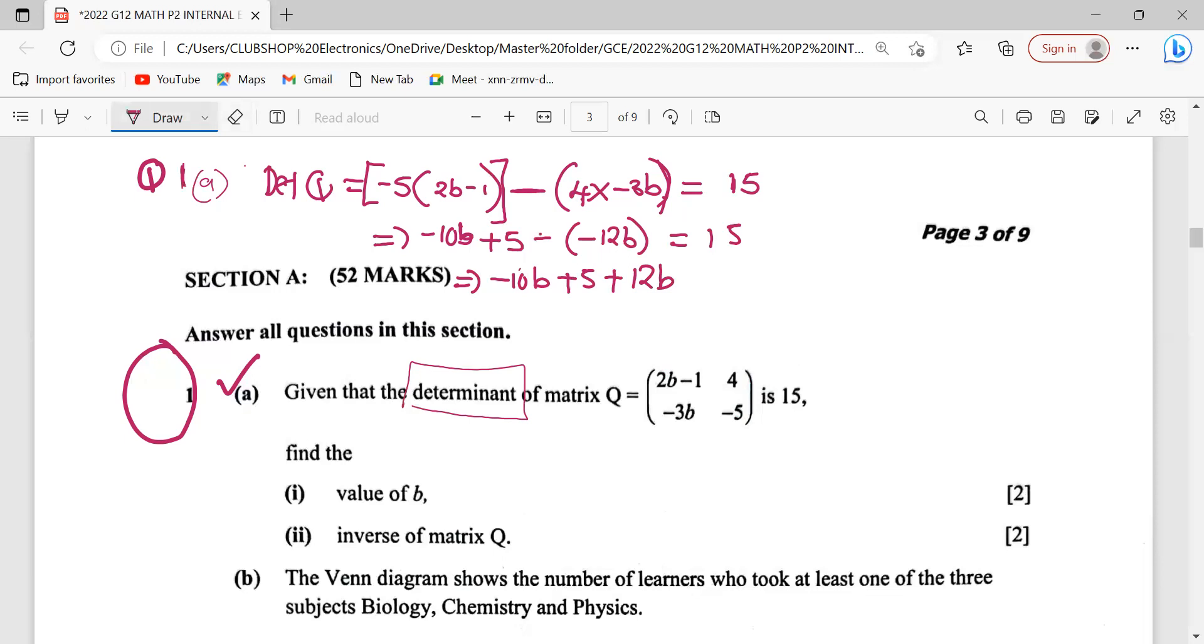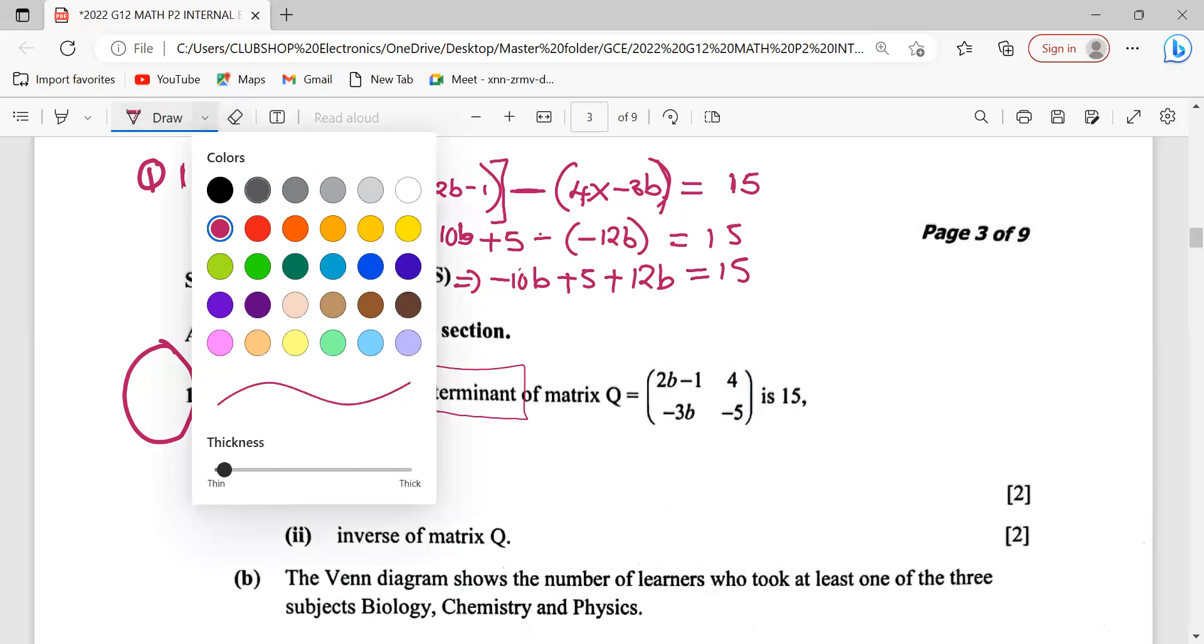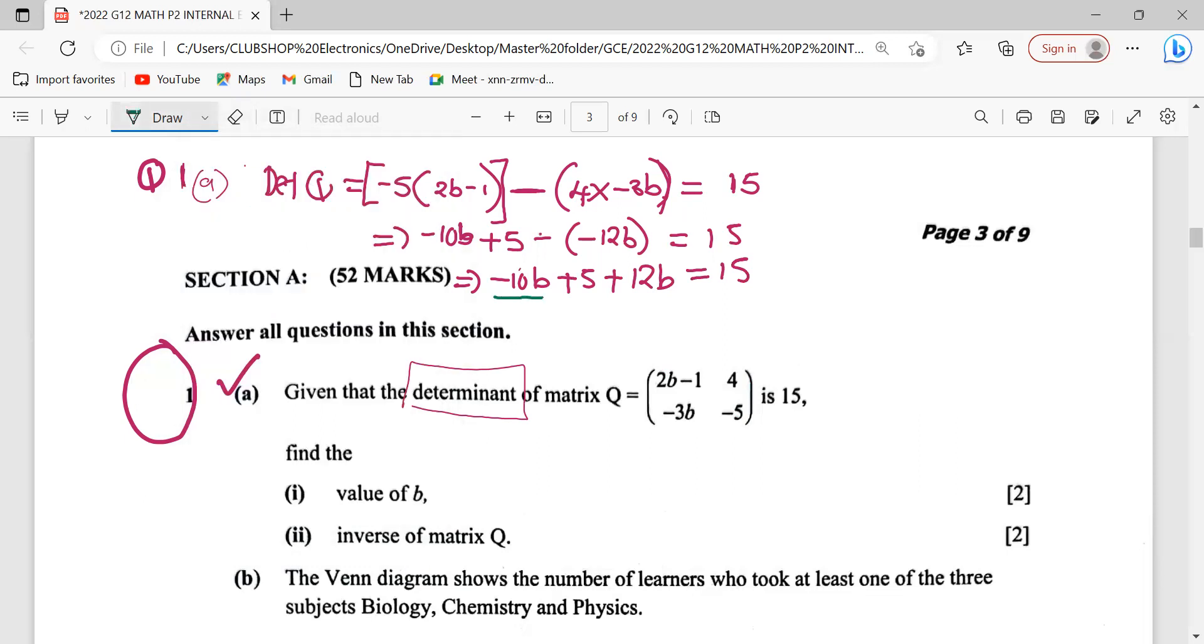We equate this to 15. Look at this - there is a b here, there is a b here. These are like terms, they have something in common so they can be combined. This is just a constant, this is a constant, so you can combine them. Therefore, this will imply that I can take negative 10b plus 12b and this will produce 15 minus 5. We'll take this 5 to the other side, hence the sign will change from positive to negative.